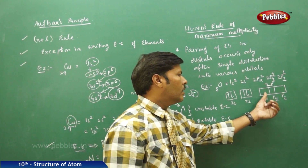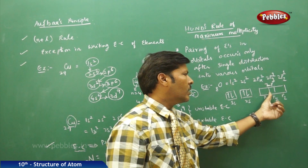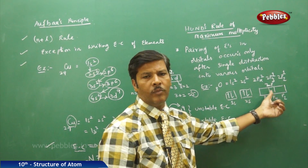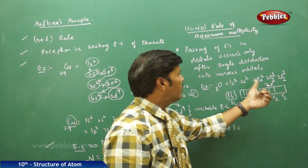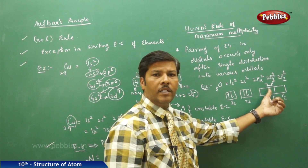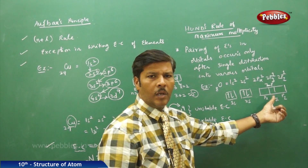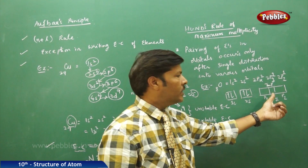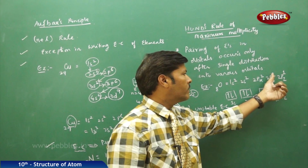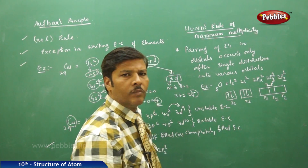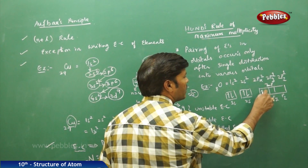For degenerate orbitals, if you take the P sublevel it has three orbitals all belonging to the same sublevel — it is a degenerate orbital. Hund's rule is most obvious in degenerate orbitals. In the 2p subshell there are four electrons total (2 plus 1 plus 1), and these must obey Hund's rule. According to Hund's rule, single distribution of electrons takes place first.